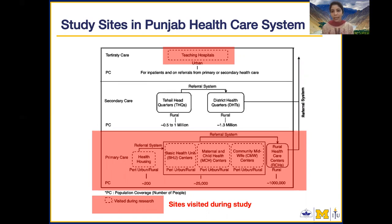Staff at primary care have very limited training and no specialized personnel, so they usually refer patients to secondary care, which has more equipment and better-trained medical personnel. But secondary care facilities are also not equipped to handle major cases, which they further refer to tertiary care, including teaching hospitals.